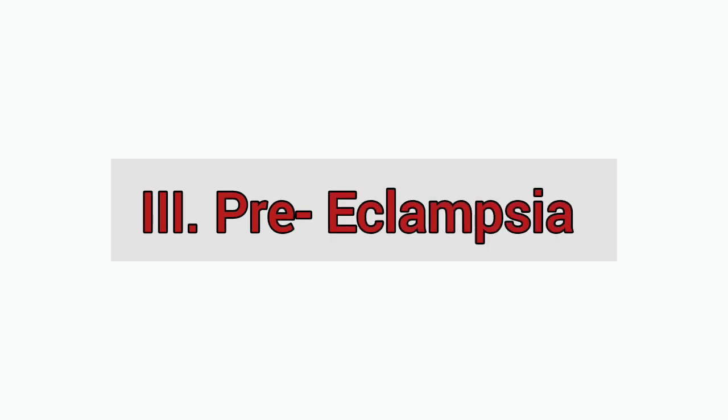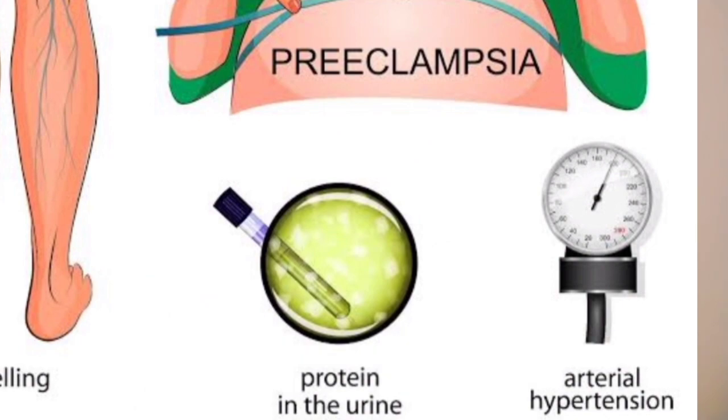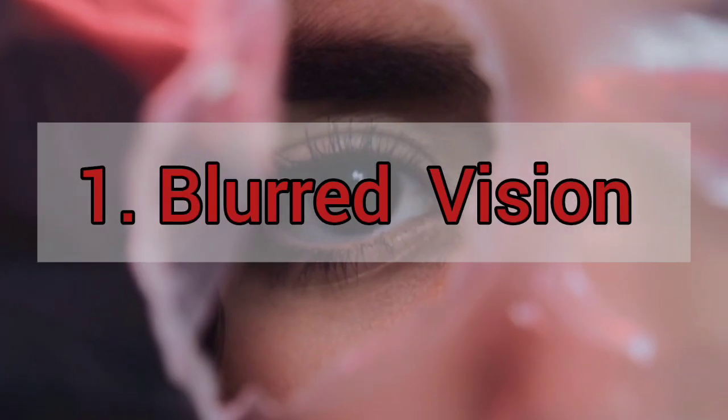Preeclampsia is when after 20 weeks gestation there is hypertension and protein in the urine, also called proteinuria. Severe preeclampsia, also called preeclampsia plus, is when preeclampsia is followed by one or multiple signs and symptoms of severity, also called severe features.